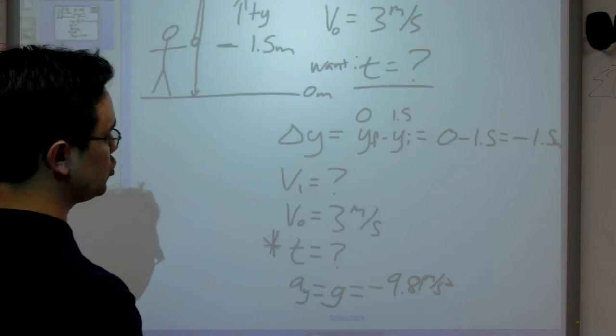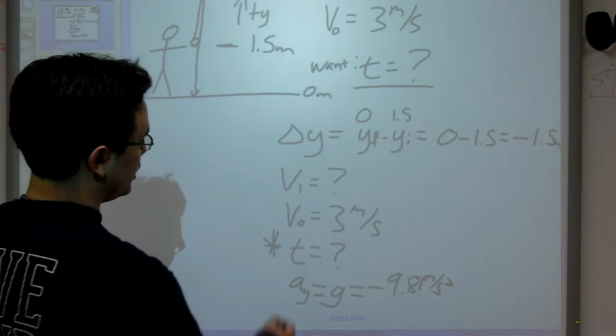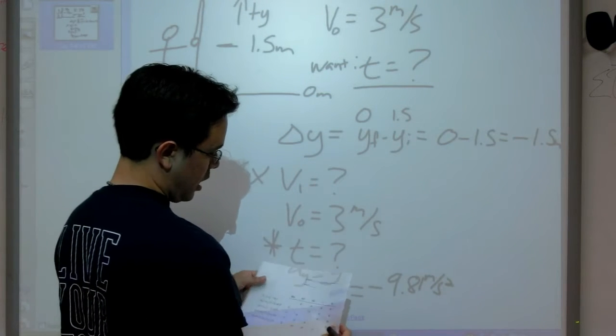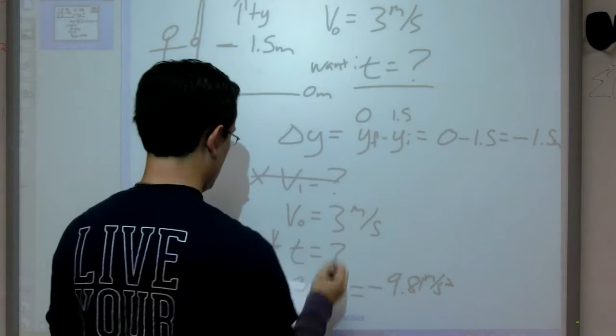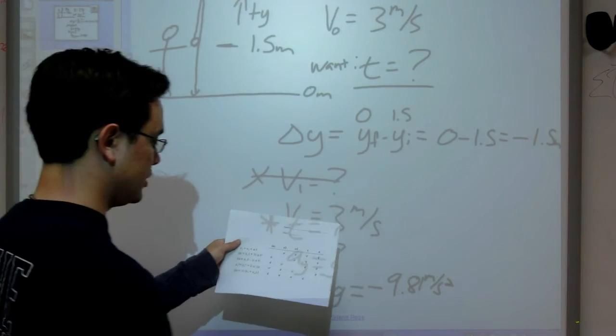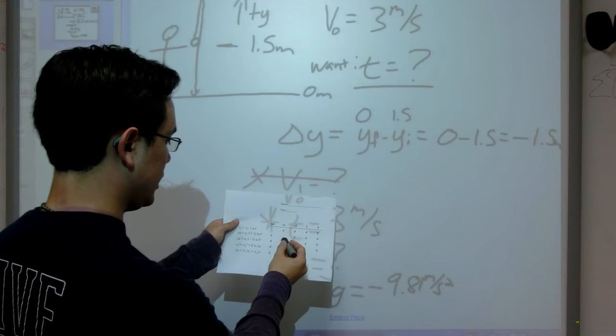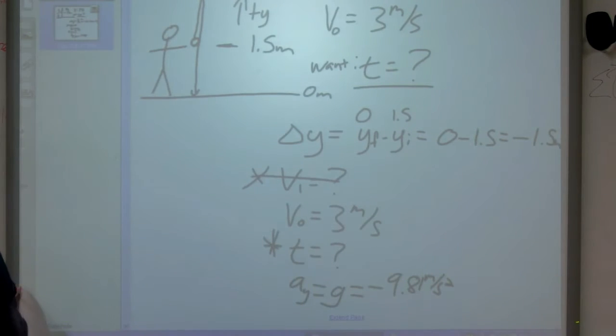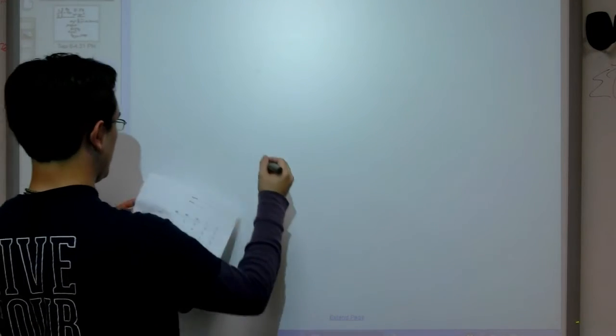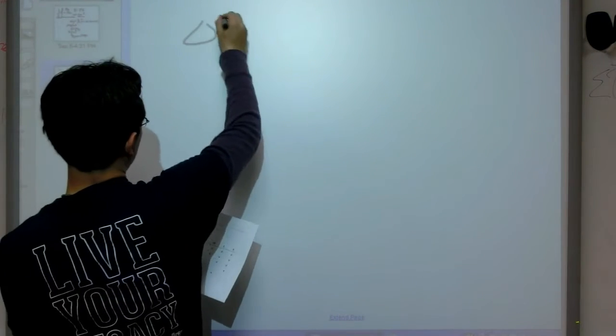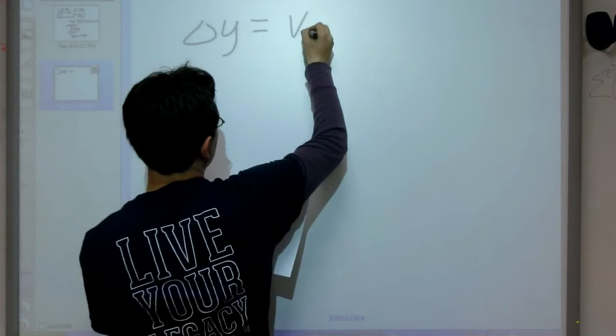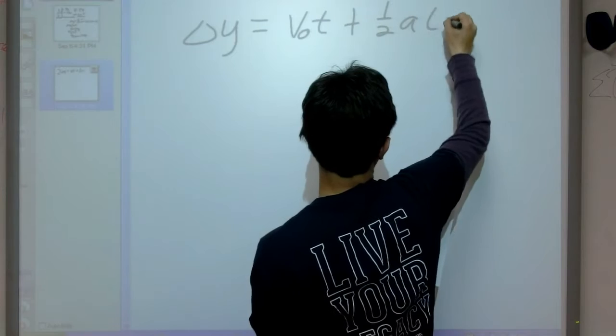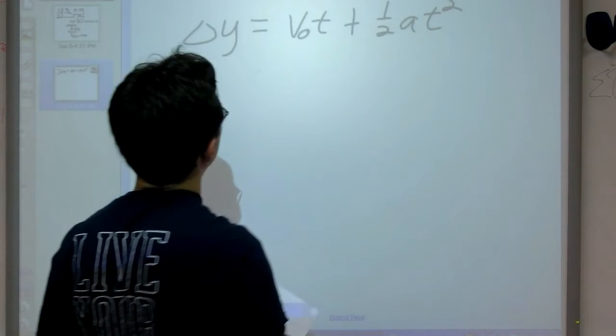Taking our usual approach, we are not interested in and do not have our final velocity. So we want to use the equation that does not have that in it. Looking in our column, that gets us down to the second equation, which is one of our more common ones. That is delta y equals our initial velocity times time, plus one-half a t squared.